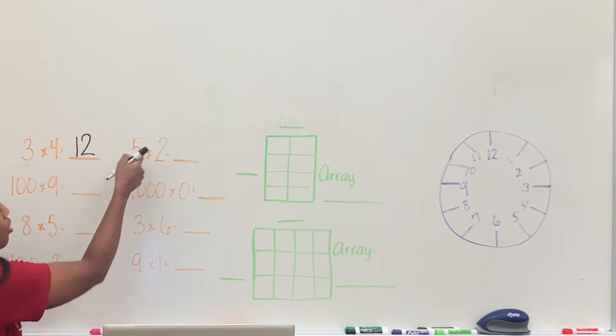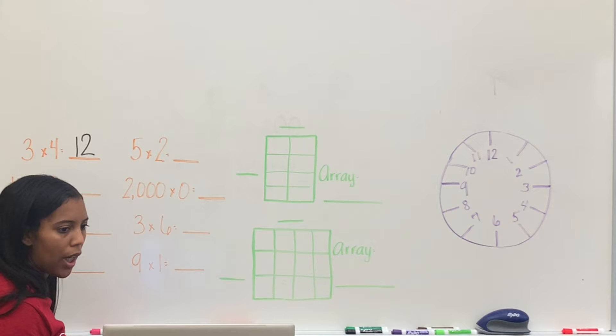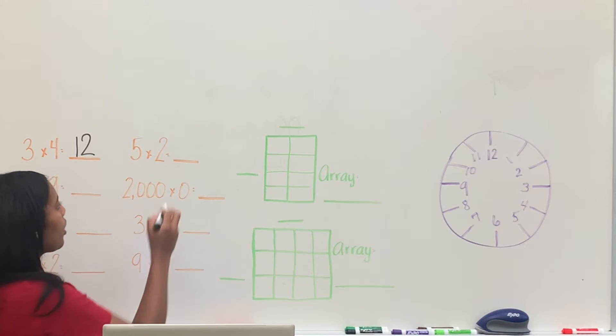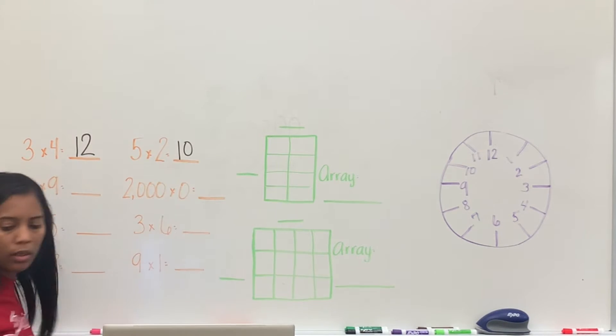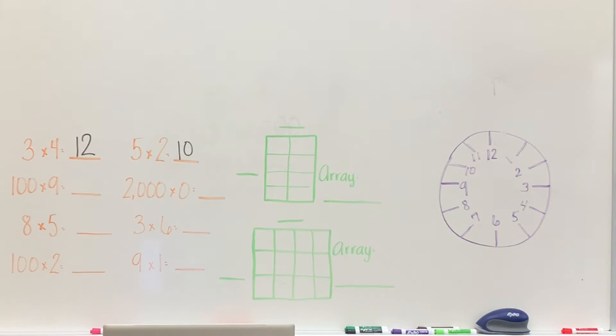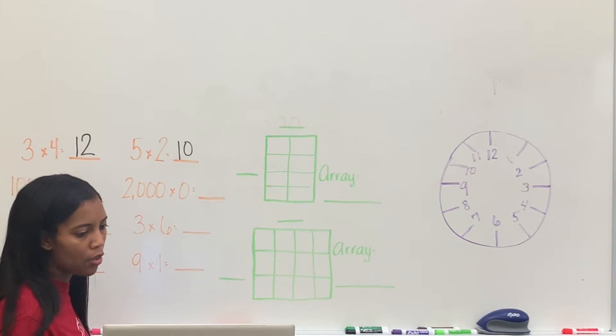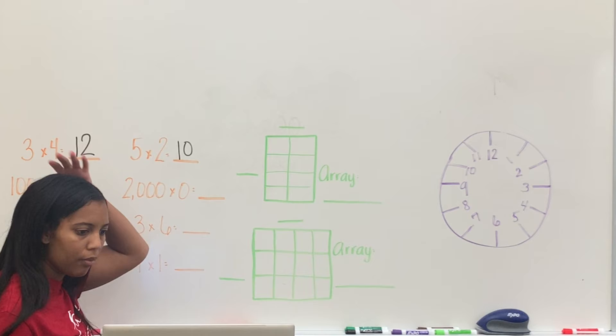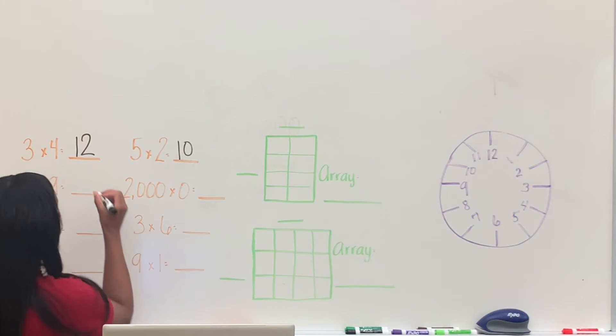5 times 2. 5 times 2. Bailey? 10. 10. Yes, ma'am. Okay. 100 times 9. 100 times 9. Josiah? 900. 900.